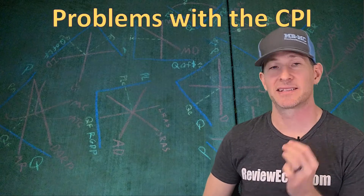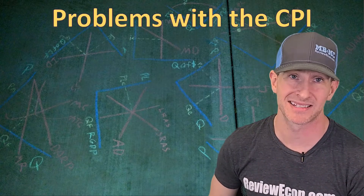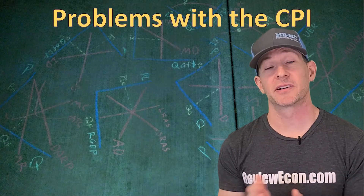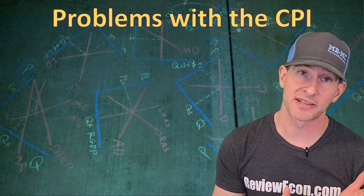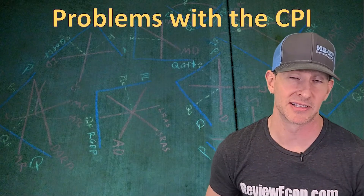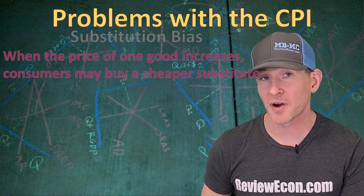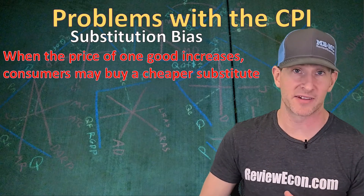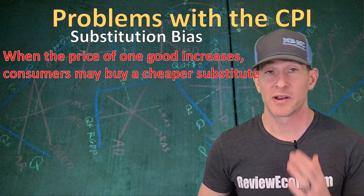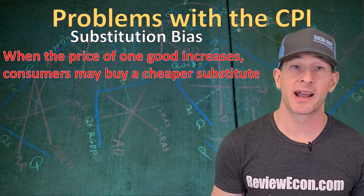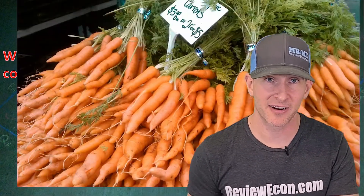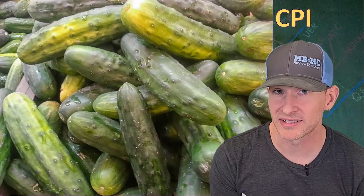The CPI attempts to capture the impact on average households when prices increase, but it does have some problems. These can cause the inflation rate to overestimate or underestimate the true impact. One problem is the substitution bias — when prices go up, consumers tend to buy other things instead. For example, if carrots get more expensive, I might buy cucumbers if their price hasn't increased.